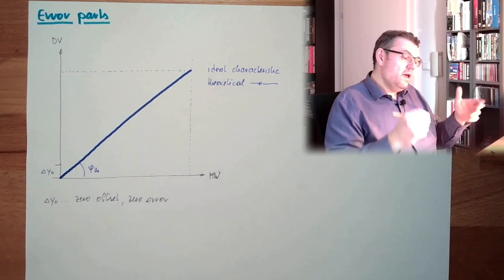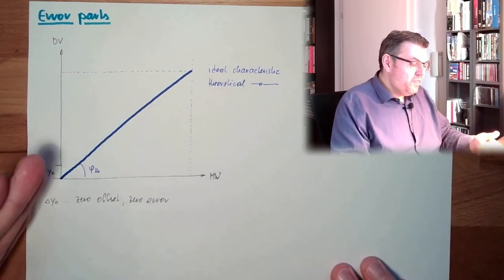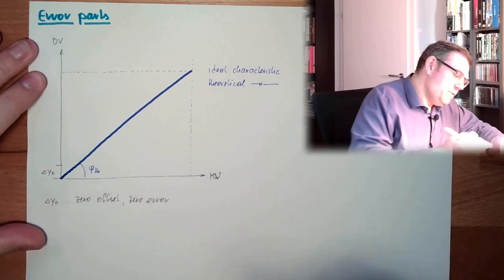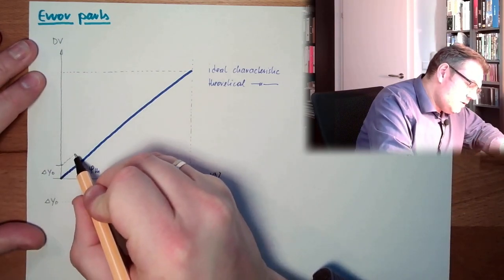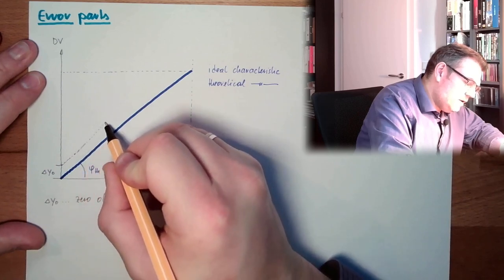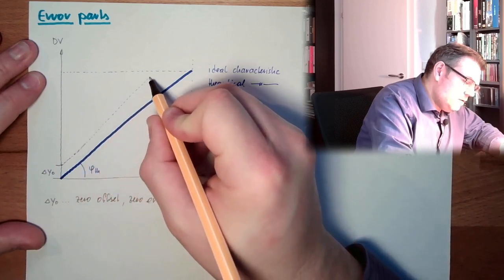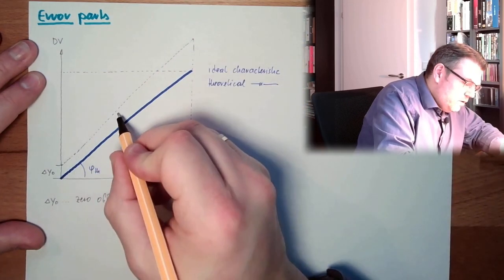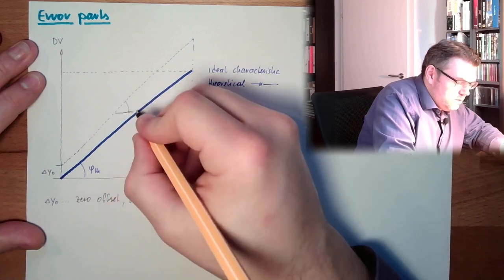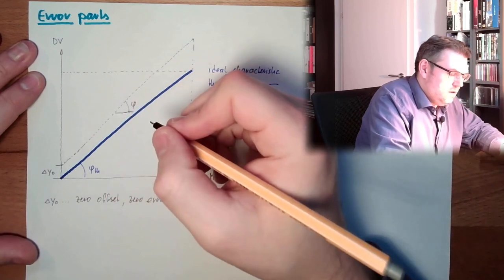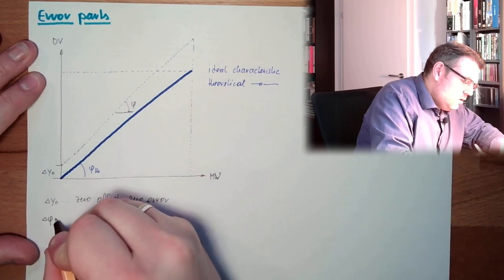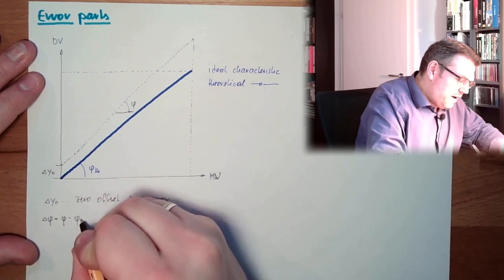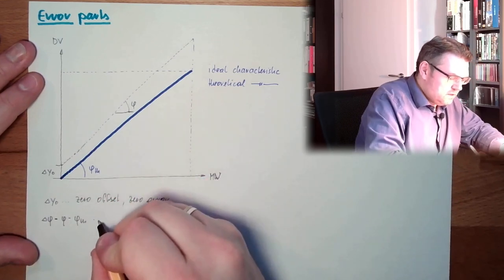That's one possibility. Another possibility would be that we do not reach the same slope, the same pitch here, that we have a different slope. So here we have phi, then we have a delta phi, which actually is phi minus phi theoretical.